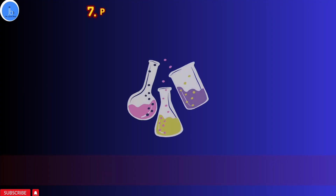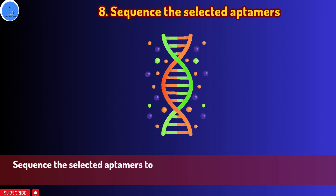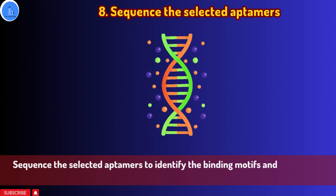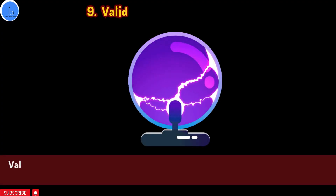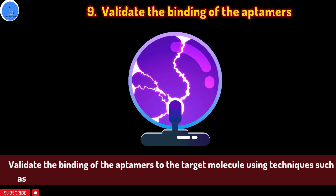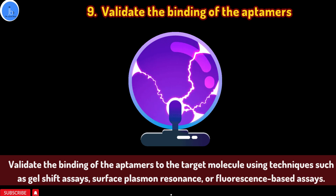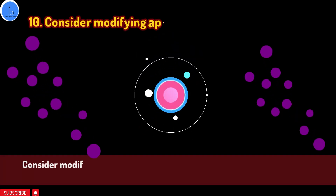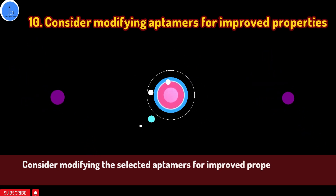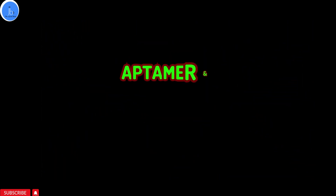Tip seven: perform multiple rounds of selection to increase the specificity and selectivity of the aptamer. It is also good practice to sequence the selected aptamer after each SELEX round — you can do conventional sequencing or NGS. With the sequences, you can identify binding motifs and optimize the aptamer sequence for your final application. You can validate aptamer binding using in silico approaches as well as experimental binding experiments such as gel shift assay, surface plasmon resonance, ITC, and fluorescence-based assays. Finally, consider modifying your aptamer for improved properties such as stability, half-life, and bioconjugation. By following these tips, you can increase the likelihood of successfully selecting high-affinity aptamers specific to your target molecule.